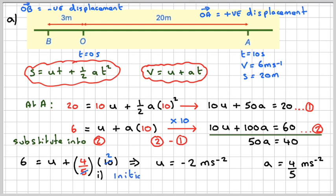We're asked for the speed. The speed is just going to be the magnitude of U. In this case, it's just going to be 2 metres per second, and the acceleration we've already found to be 4 fifths metres per second squared.